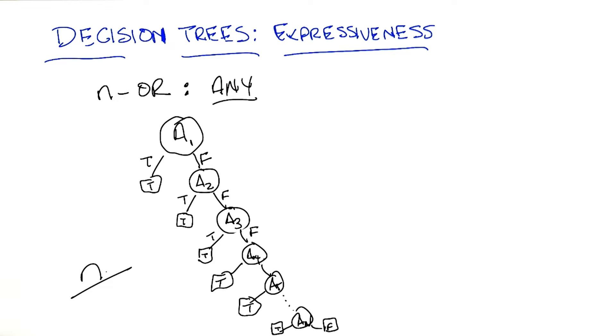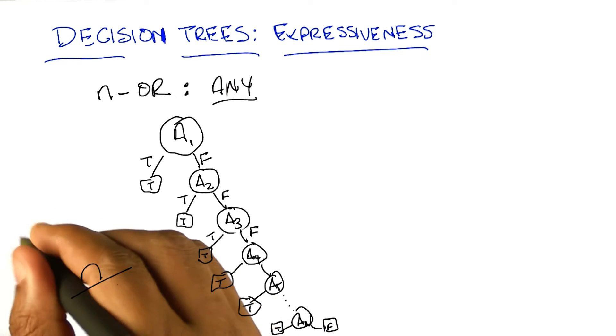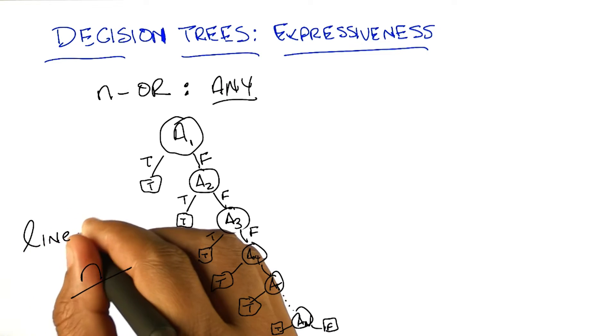So we have a term for this sort of thing. The size of the decision tree is, in fact, linear in n. And that's for any. Now, what about an n version of XOR?